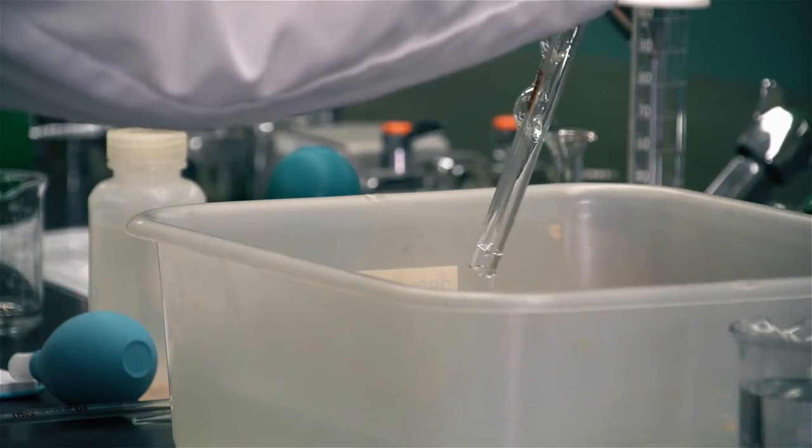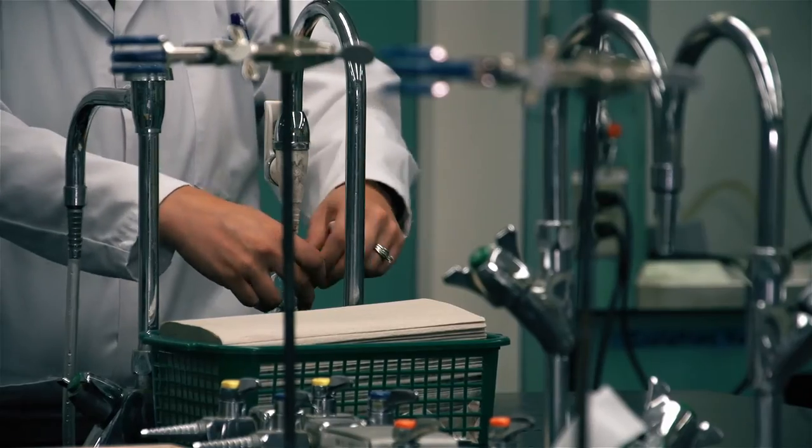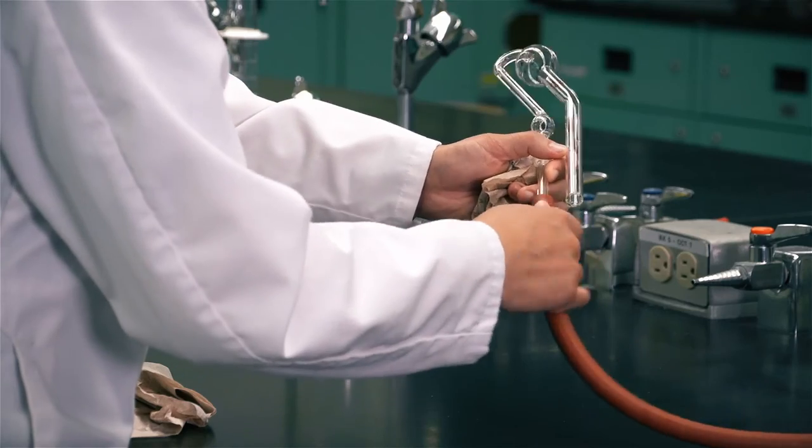Remove the viscometer from the detergent bath and rinse it thoroughly with water using a large beaker and a water aspirator.